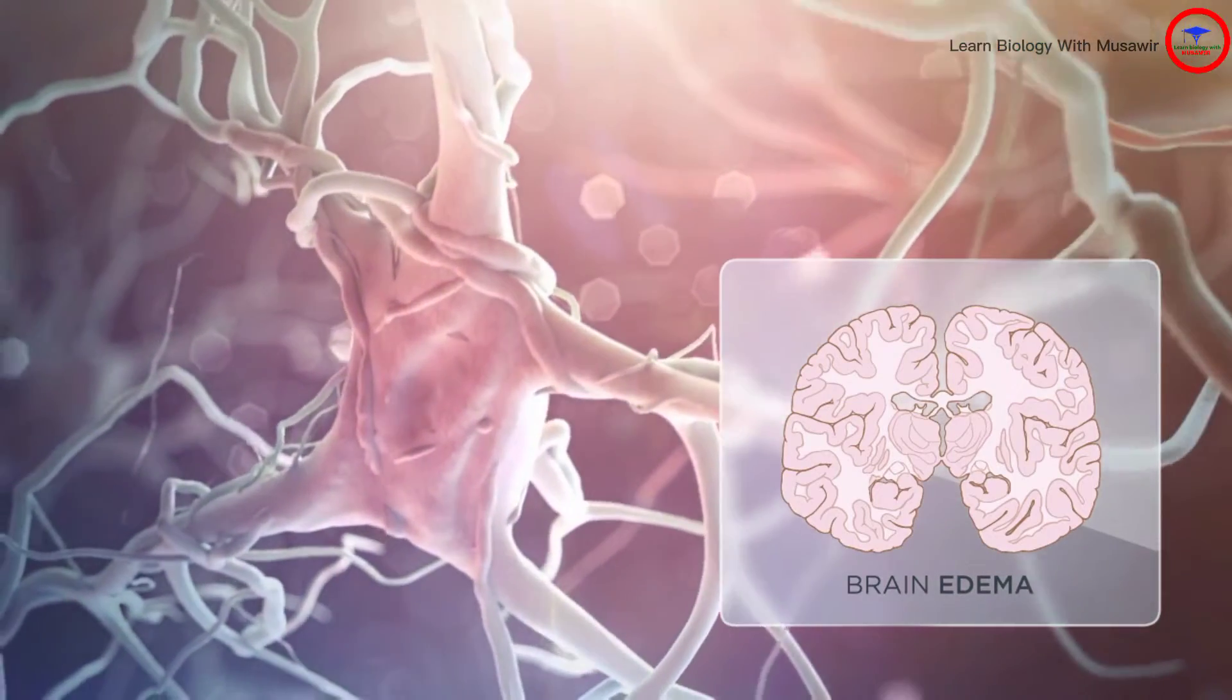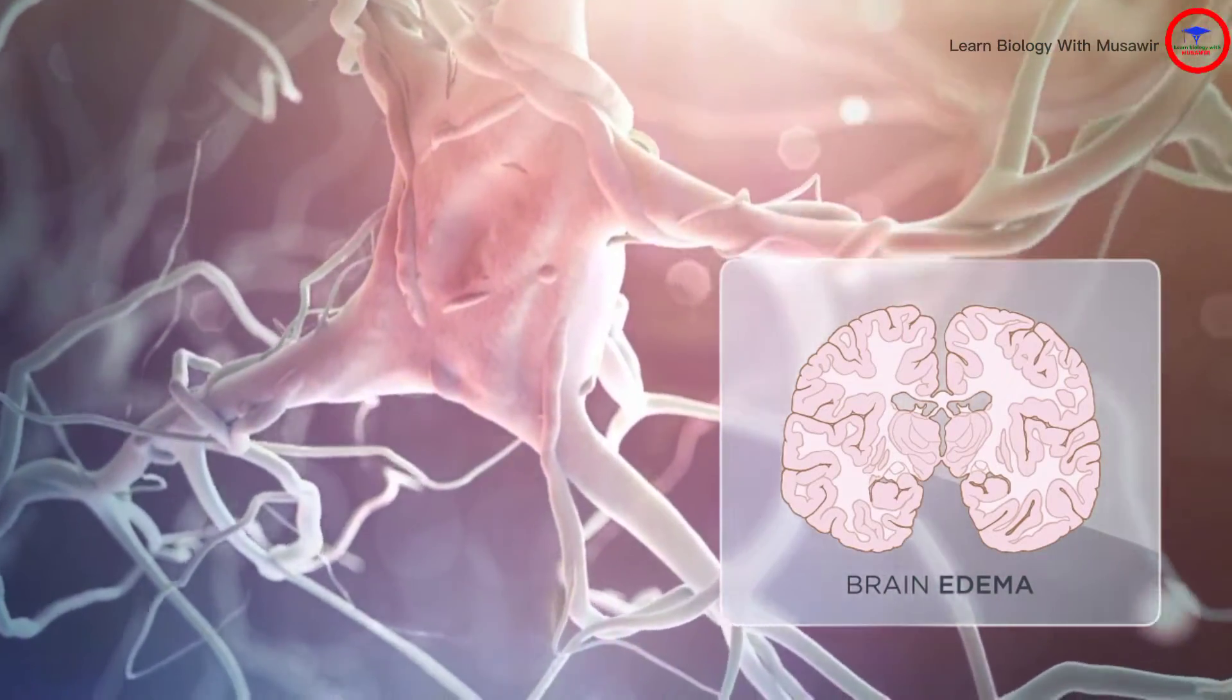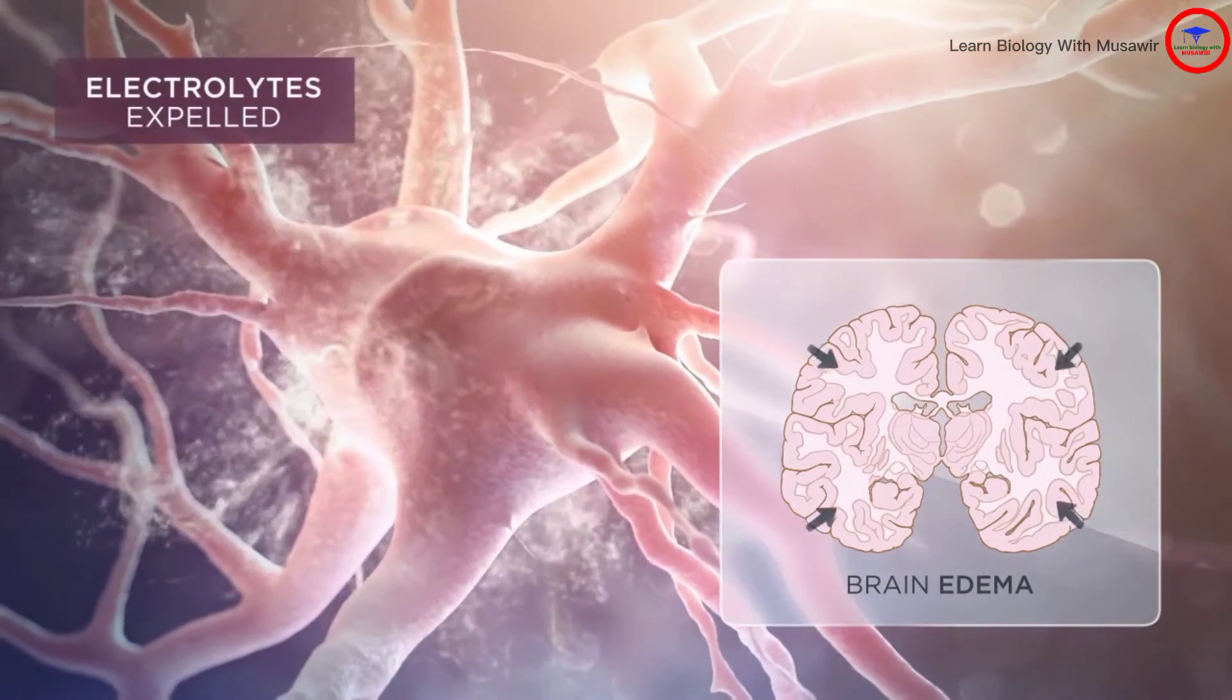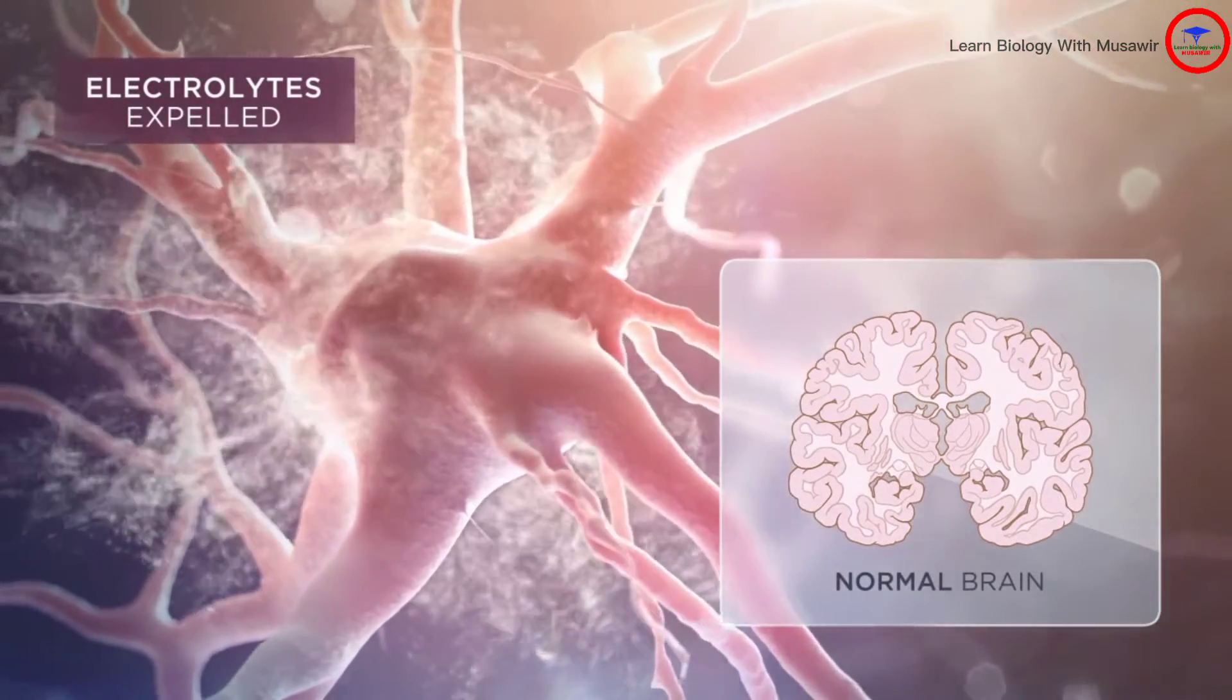In an effort to reduce cellular edema and intracranial pressure, glial cells rapidly expel electrolytes, and partial restoration of brain volume may occur within a few hours.